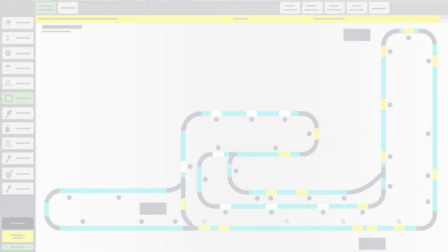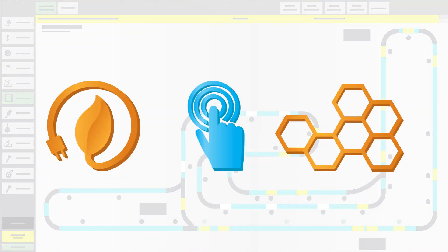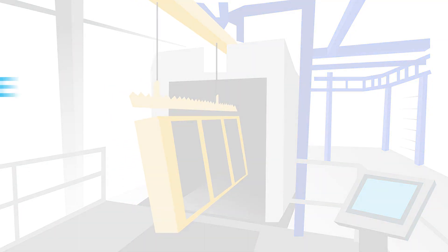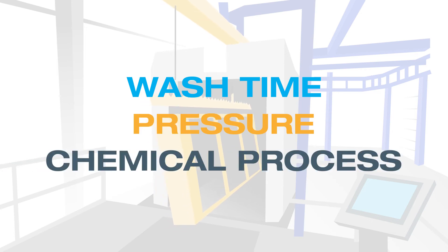IntelliFinishing provides the most energy efficient, programmable, and modular process equipment. Washer modules can be programmed independently to accommodate variations in wash time, pressure, and chemical process.